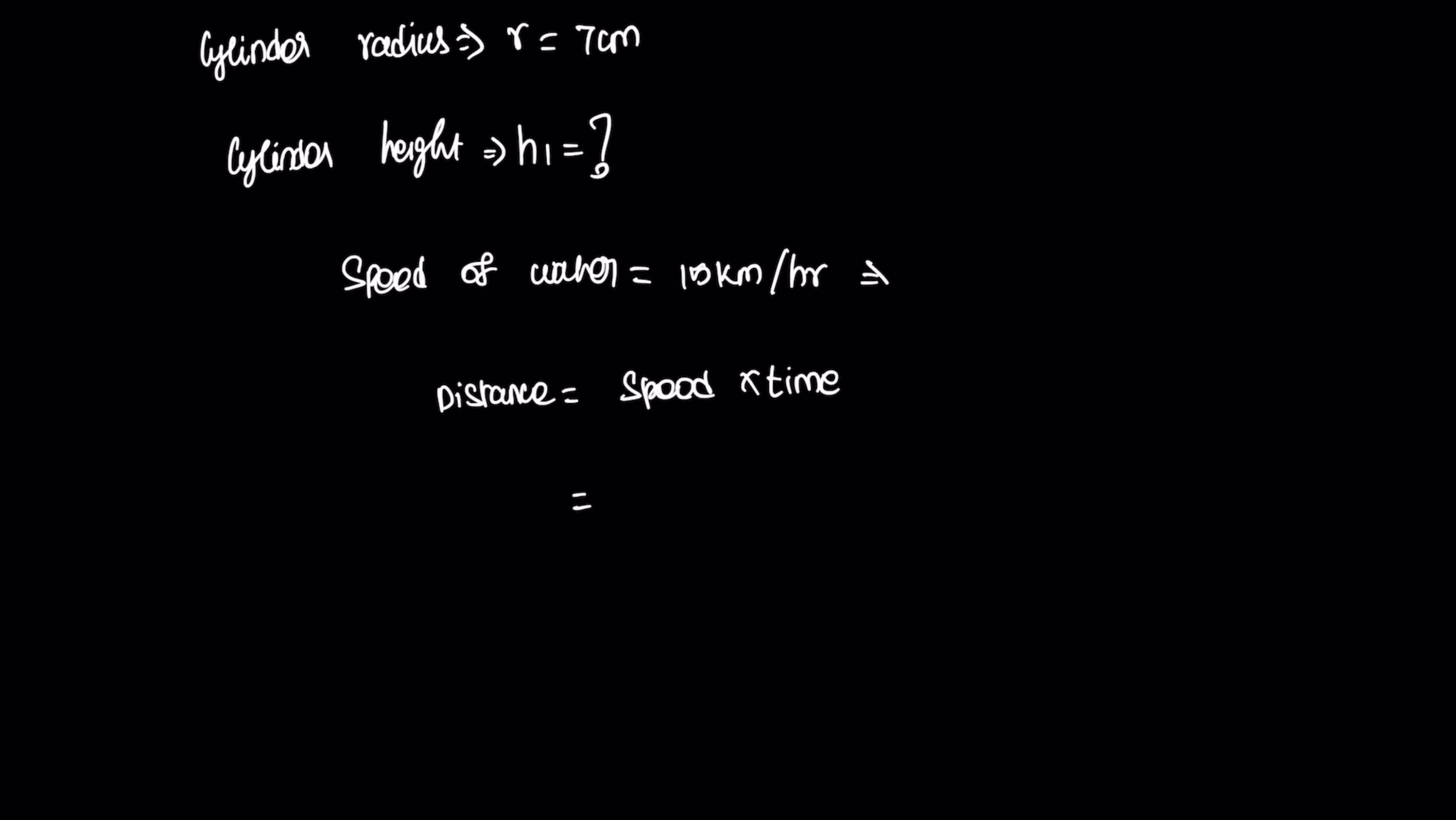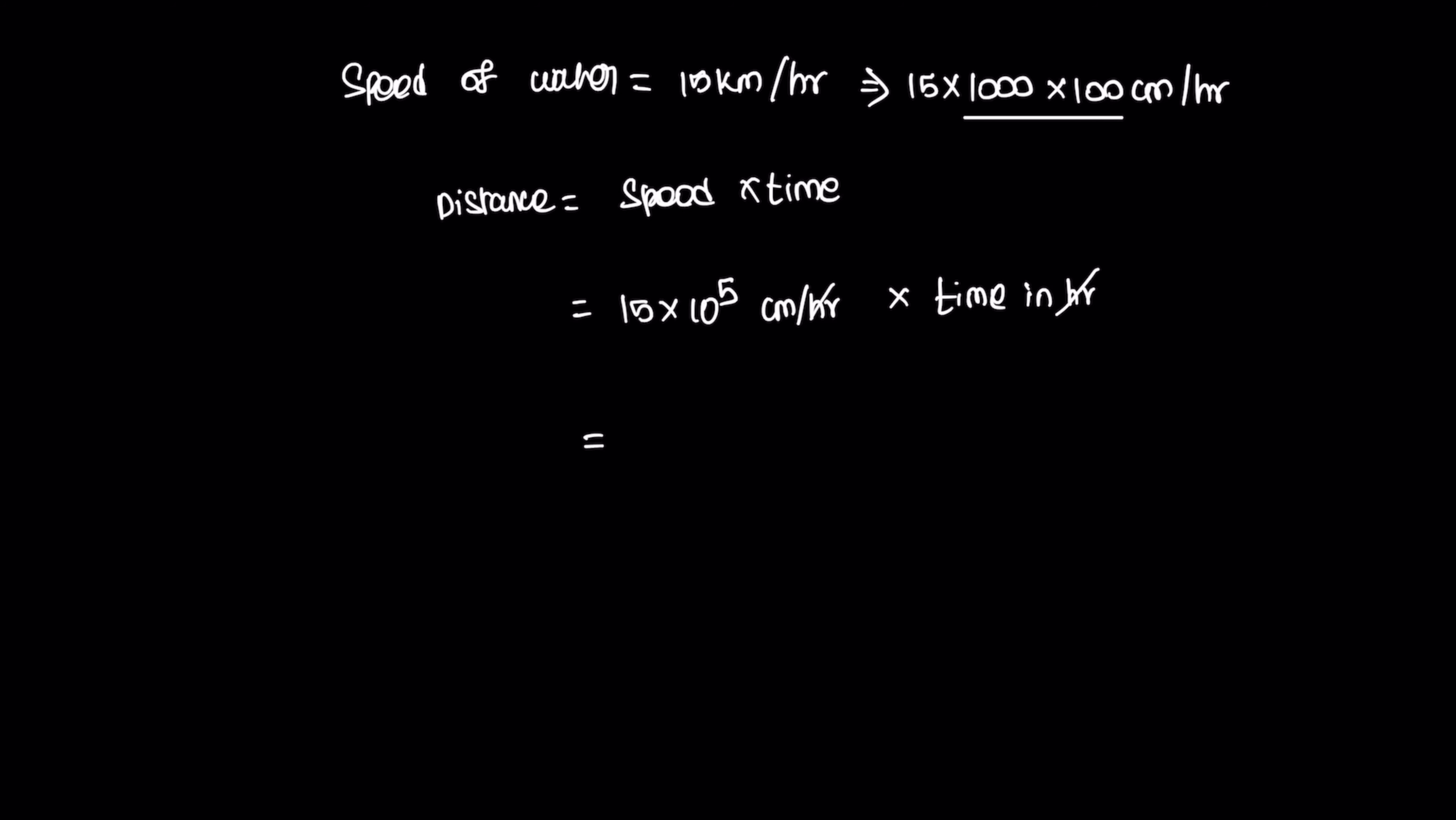Speed into time equals height. Speed value is 15 km per hour. Converting to centimeters: 1 km equals 1000 meters multiplied by 100 gives centimeters. So 15 times 10 to the power of 5 centimeters per hour multiplied by time. The final unit is centimeters. This is height h1.